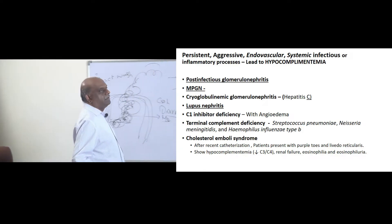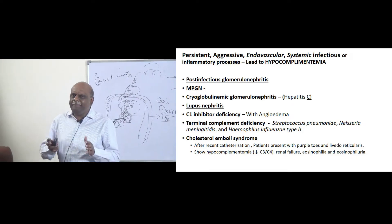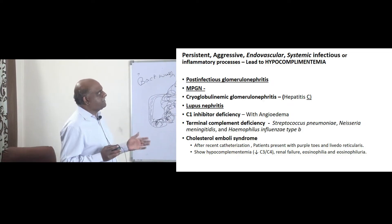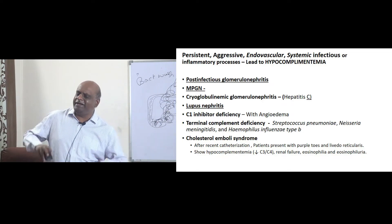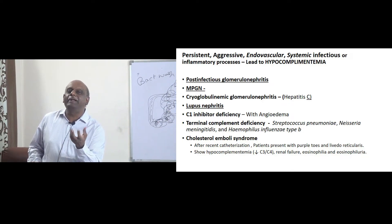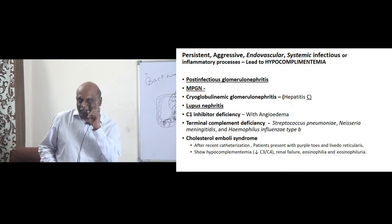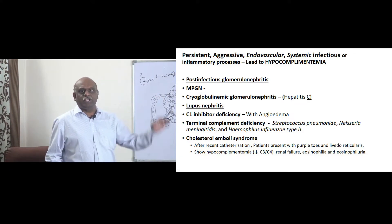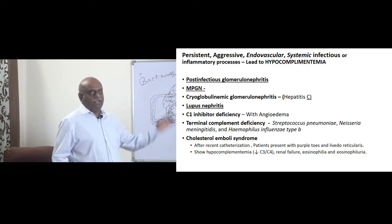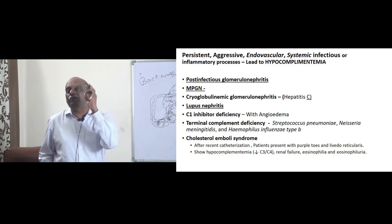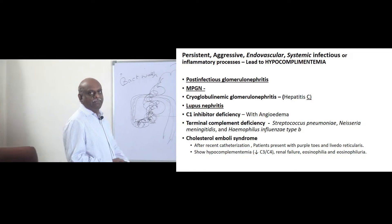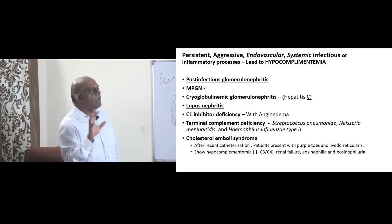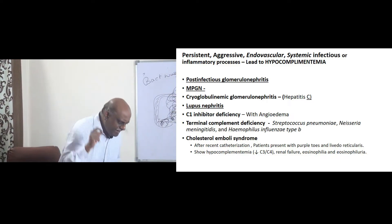Remember: any persistent, aggressive, endovascular, systemic infectious or inflammatory process consumes the complement and leads to hypocomplementemia. The key words to remember are persistent, aggressive, endovascular, systemic infection or inflammation leads to complement exhaustion. So what glomerulonephritis have a low complement, and what glomerulonephritis have a normal complement? This is a favorite question of the examiner.